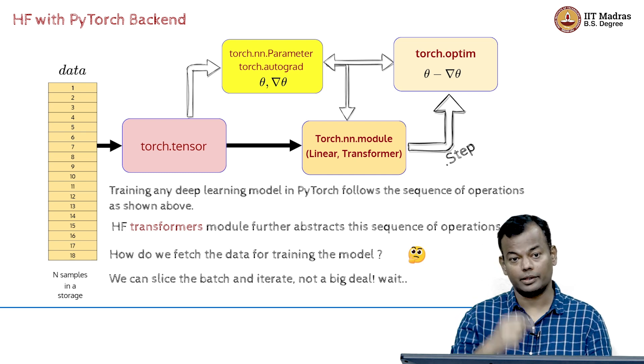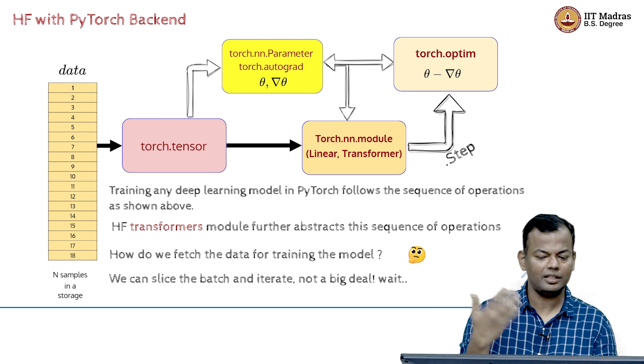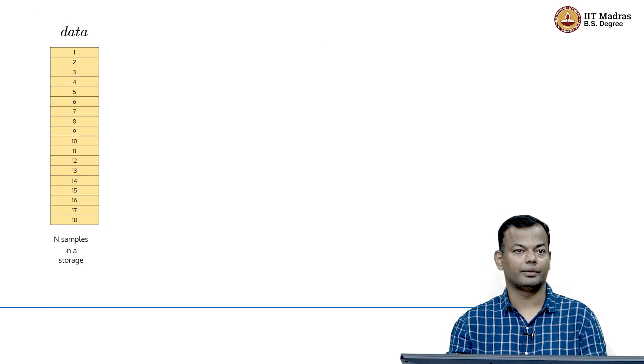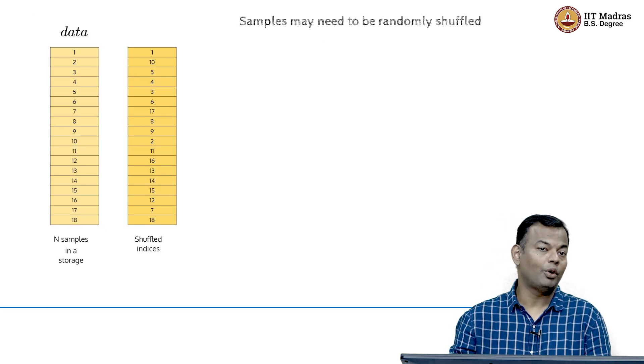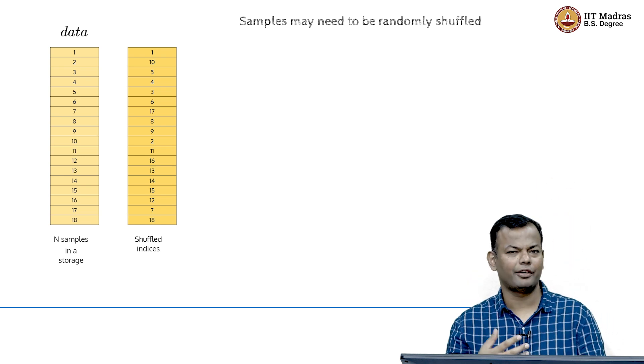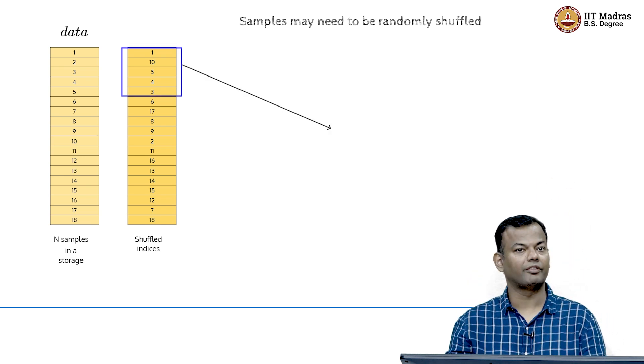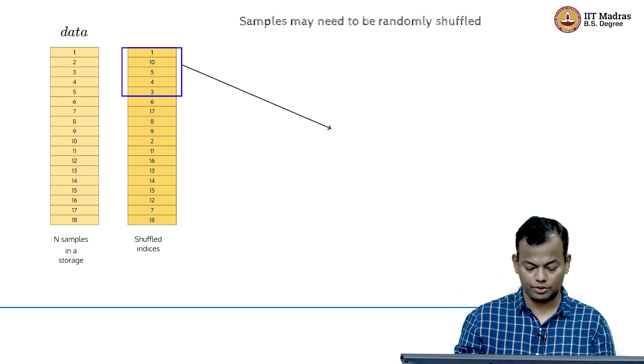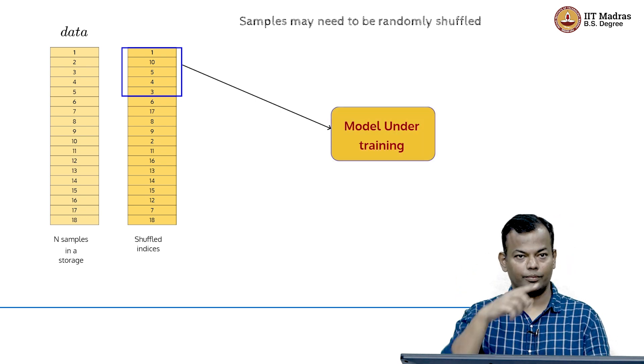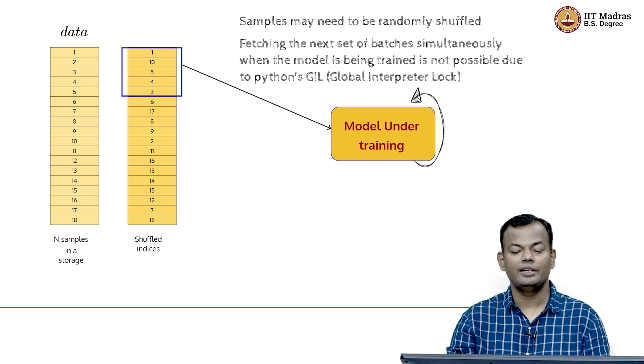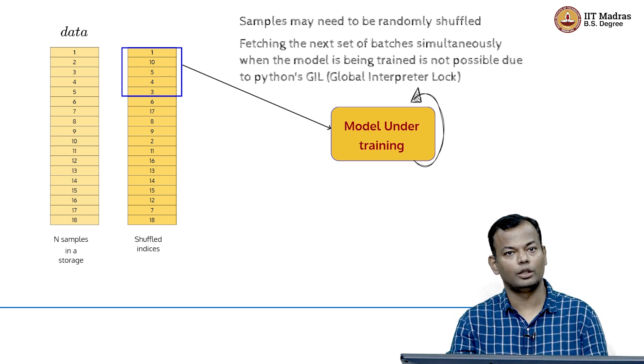But how do we fetch the data? We can slice the data into batches and then iterate. It is not a big deal, but we need to be careful about something. We may want to randomly shuffle the samples. This is the original data given to you and any kind of training always starts with some sort of shuffling. And this shuffling sometimes happens at every epoch also.